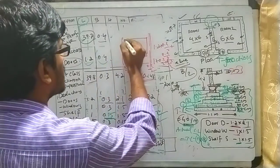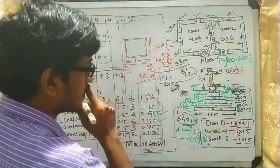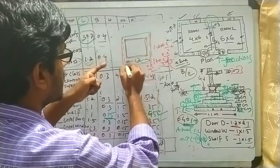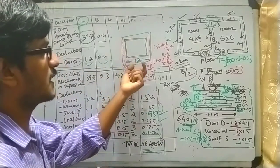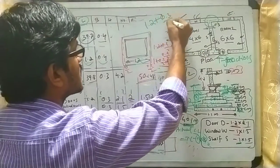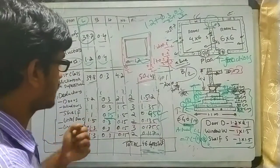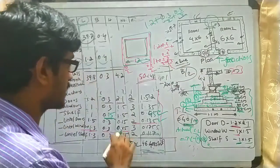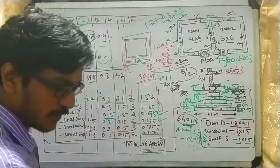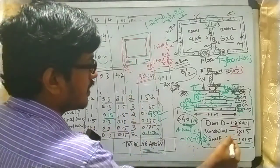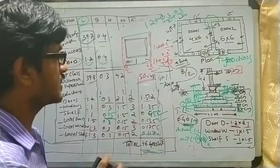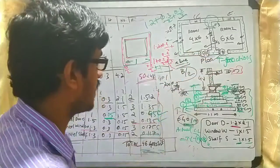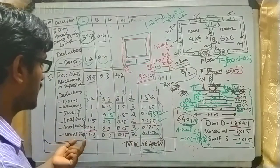For the door lintel, the length is calculated as 1.2 plus 0.3/2 plus 0.3/2, giving 1.5 meters. The thickness is 0.3 and height is 0.15 meter with 2 doors. For the window lintel, the length is 1.0 plus 0.3/2 plus 0.3/2, giving 1.3 meters. The thickness is 0.3, height 0.15, and there are 3 windows. The same principle applies to the shelf lintel.